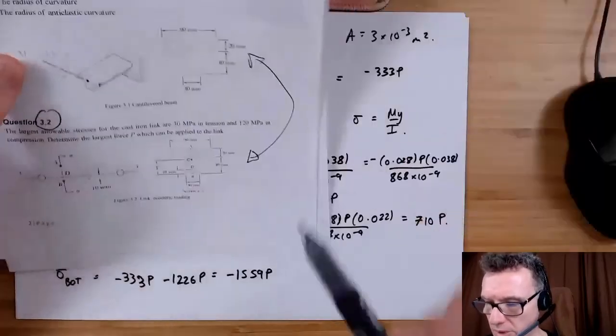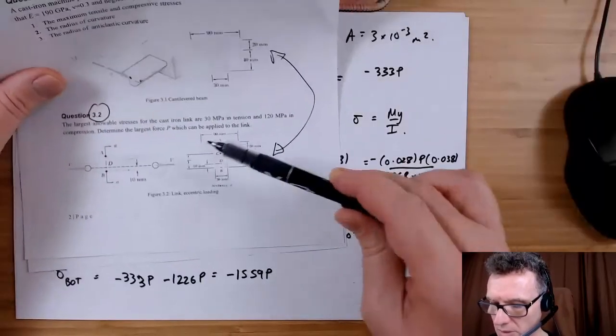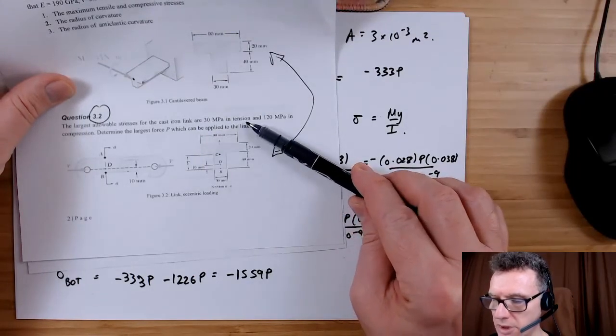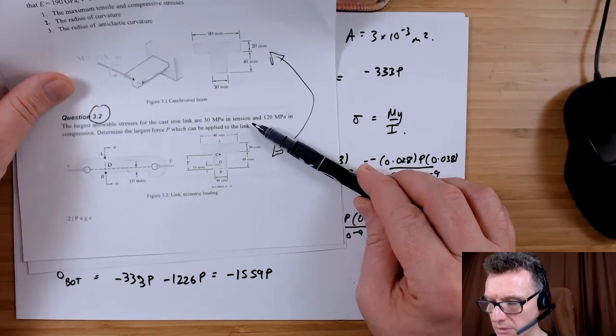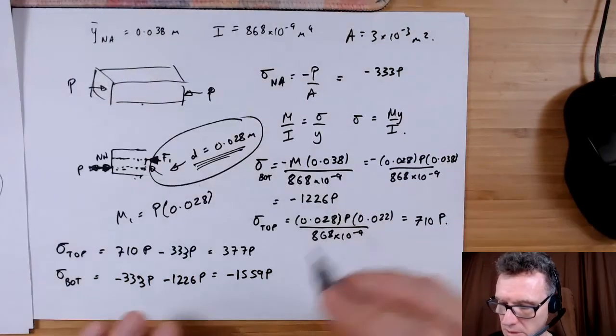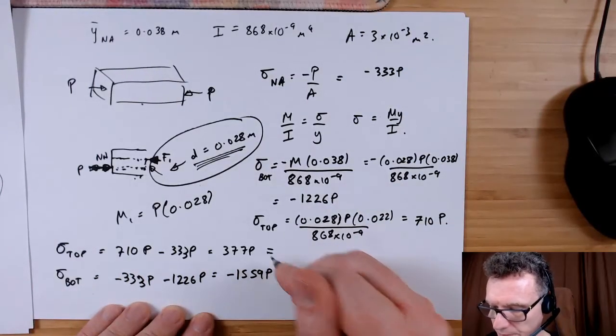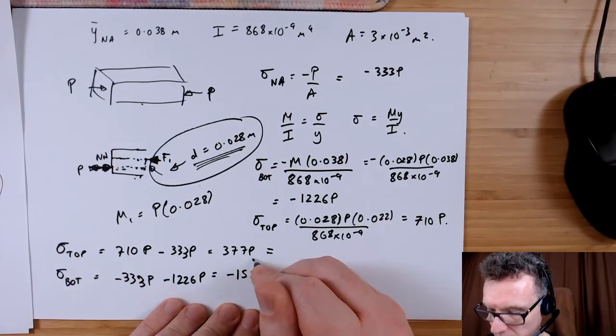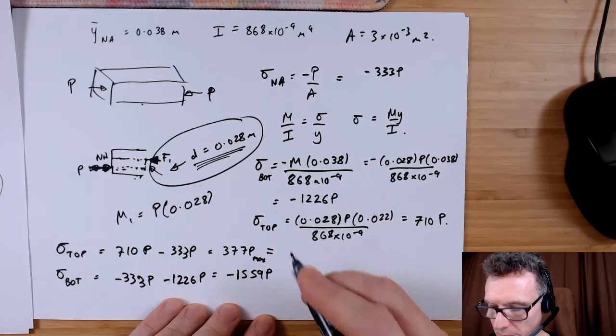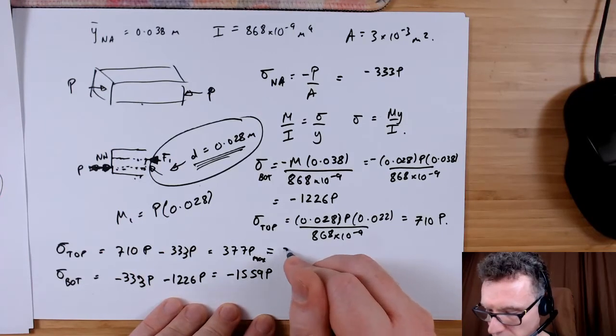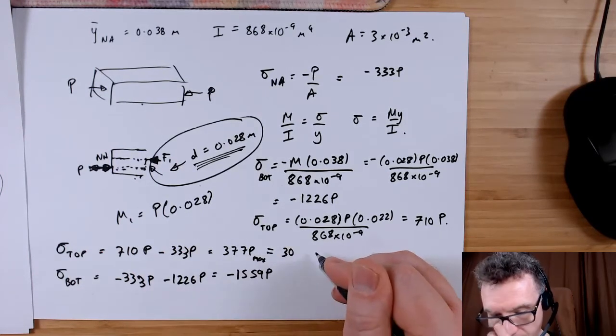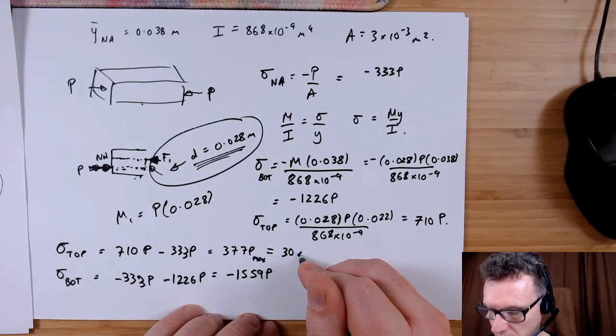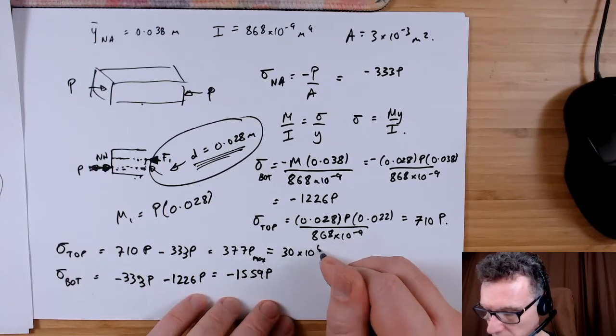And say to ourselves, well you've got different factors for this permissible stress. So the permissible stress at the top which is the tension one is 30 megapascals. So let's set that to be the maximum, so 30 megapascals times 10 to the 6.